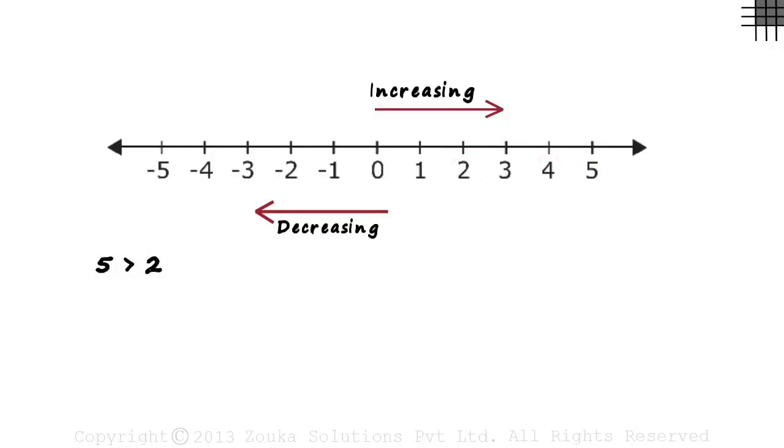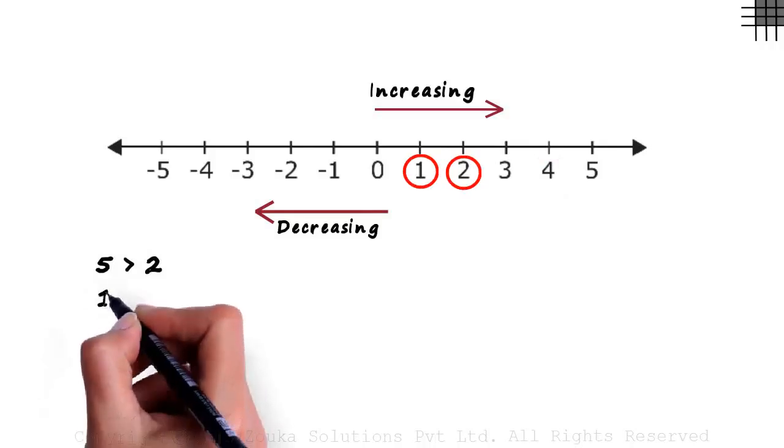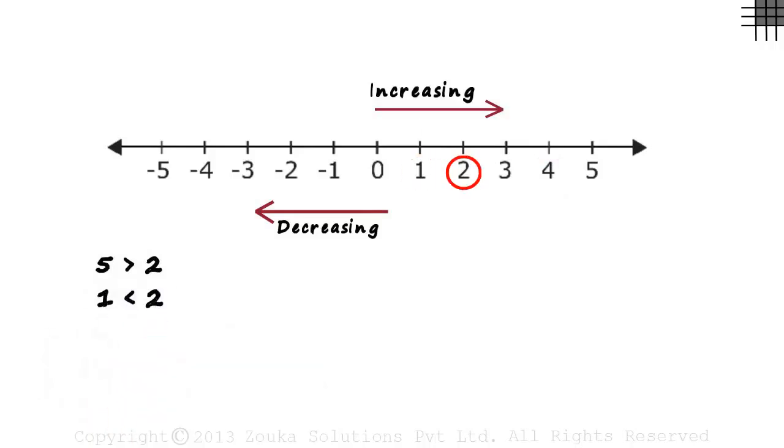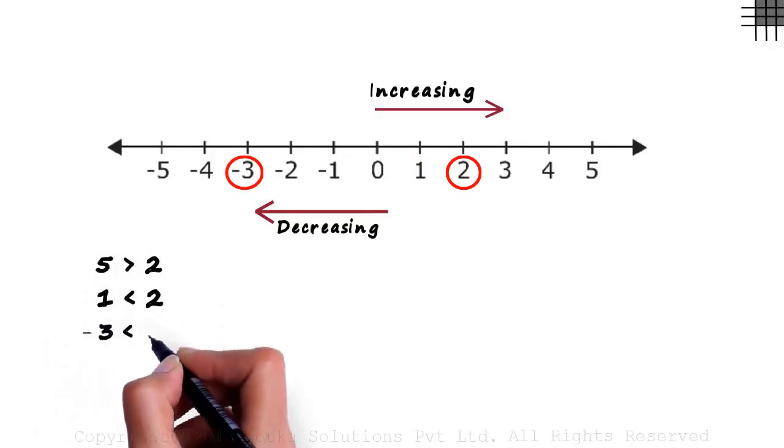If we choose a number to the left of 2, say 1, we can see that 1 is less than 2. Suppose we choose minus 3. Minus 3 is also less than 2.